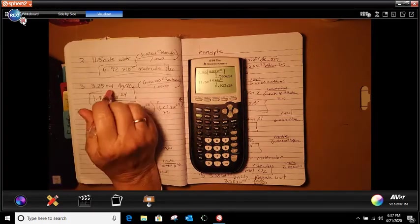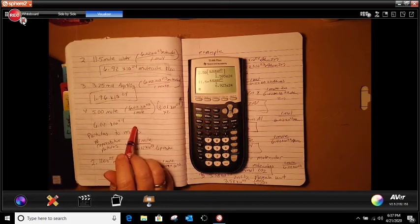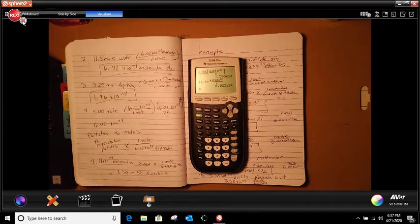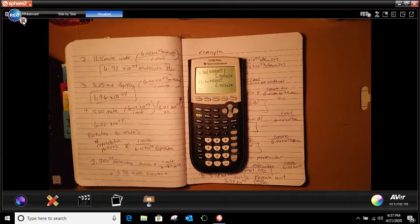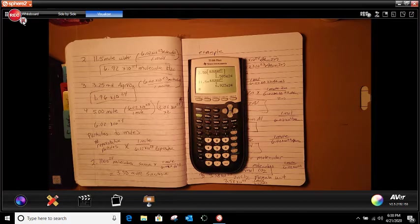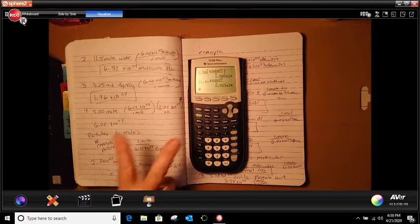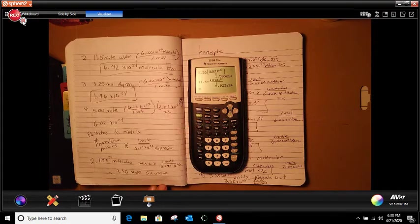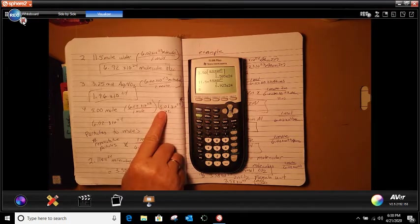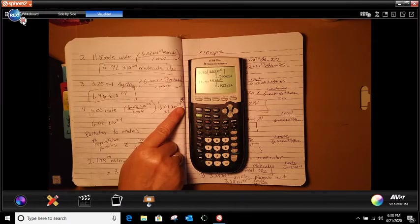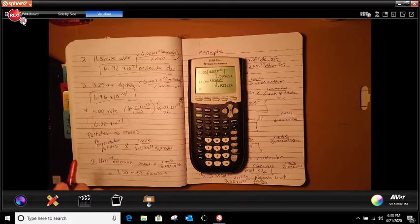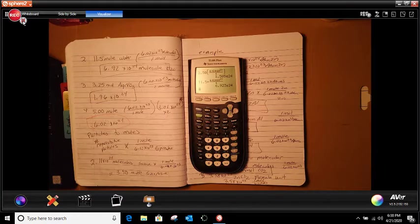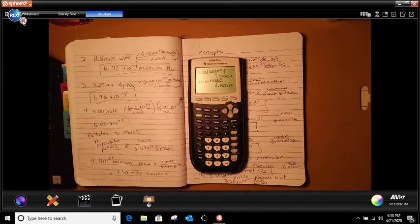And I get 6.92 times 10 to the 24th power. So number three is about the same thing. Number four, basically what it does here is four is a little bit different because it's called a challenge problem. It says calculate the number of oxygen atoms in five moles of oxygen molecule. Oxygen is a diatomic molecule. So what that means, that means there's two oxygens. So what you're going to do is you're going to take your number that you get, which is 3.01 times 10 to the 24th power. And you're going to multiply that by two and you should get 6.02 times 10 to the 24th.